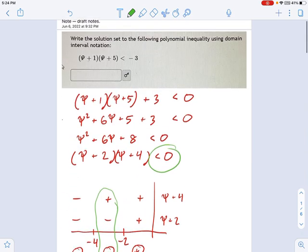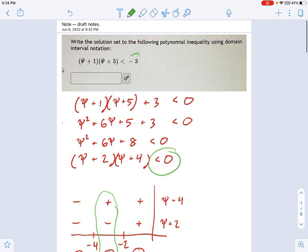And there we go. So the key step here is when you see something that does not have zero on one side, just work at it until it does.